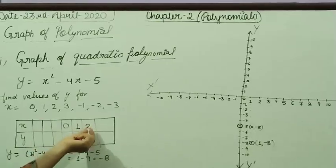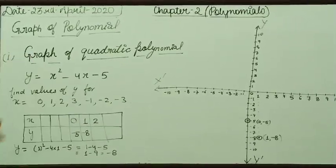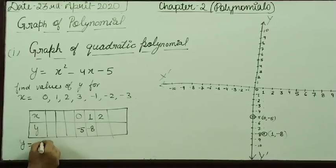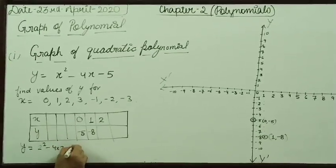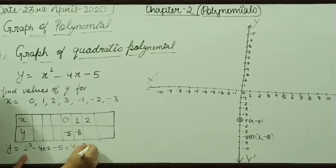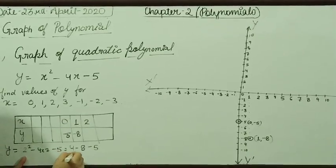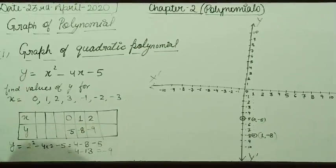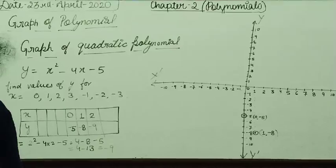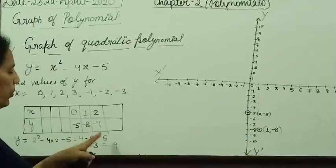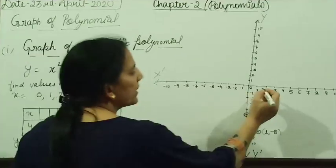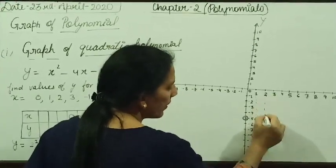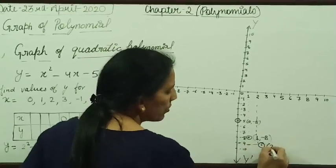Now come to the next point, x is equal to 2. If the value of x is 2, then put the value in place of x: 2 square minus 4 into 2 minus 5. You will get 4 minus 8 minus 5, which is 4 minus 13. So, you will get minus 9. Your point to plot is (2, -9).